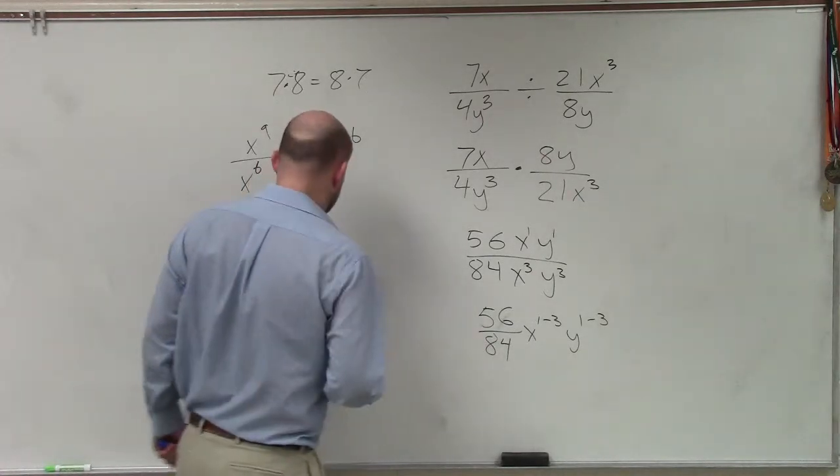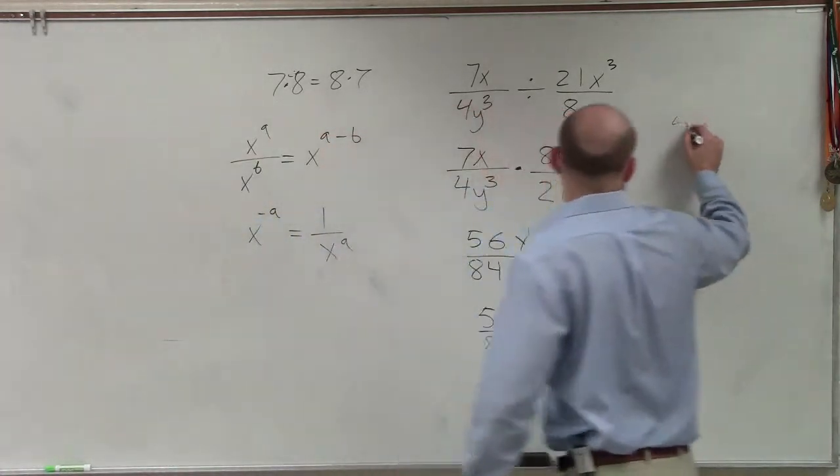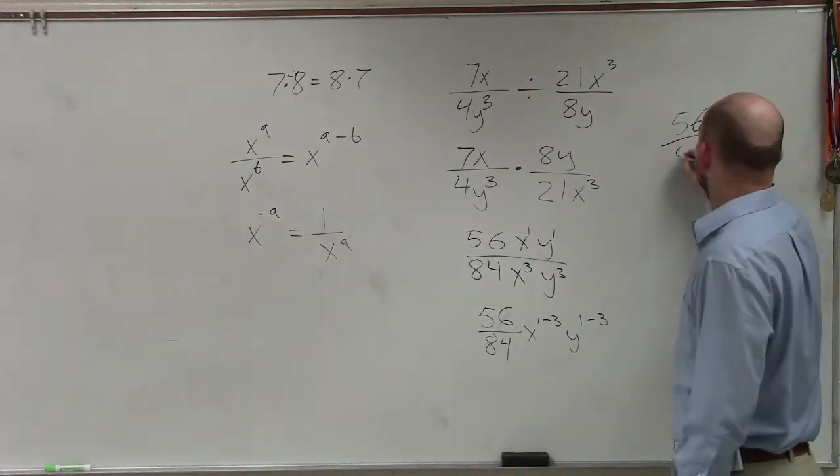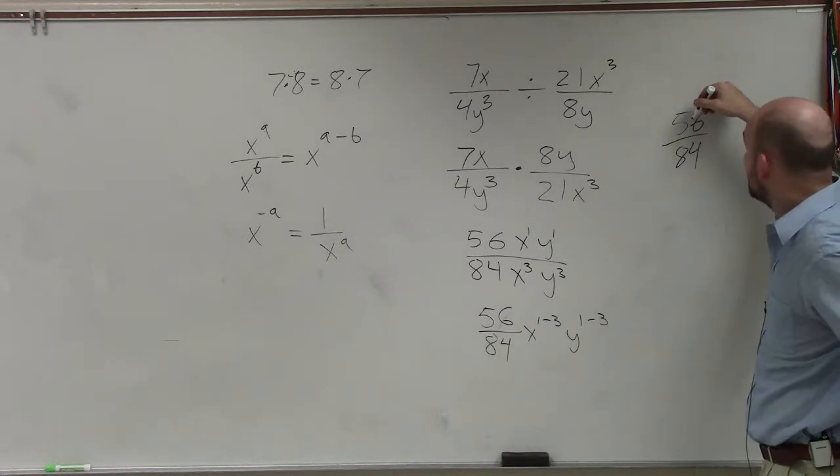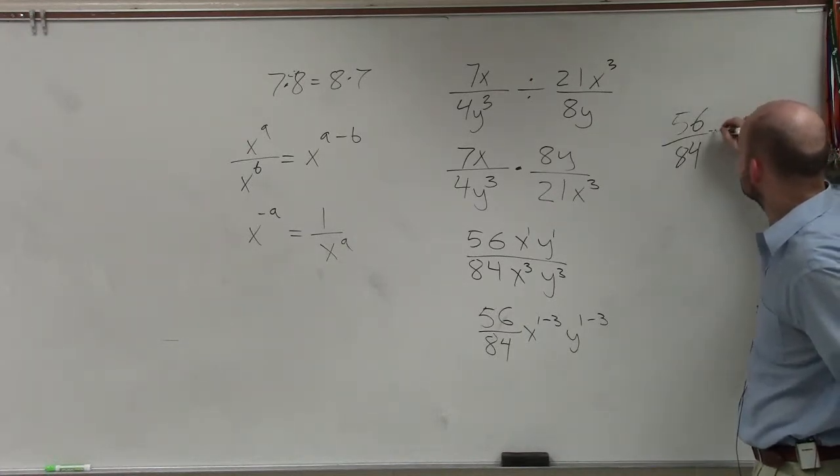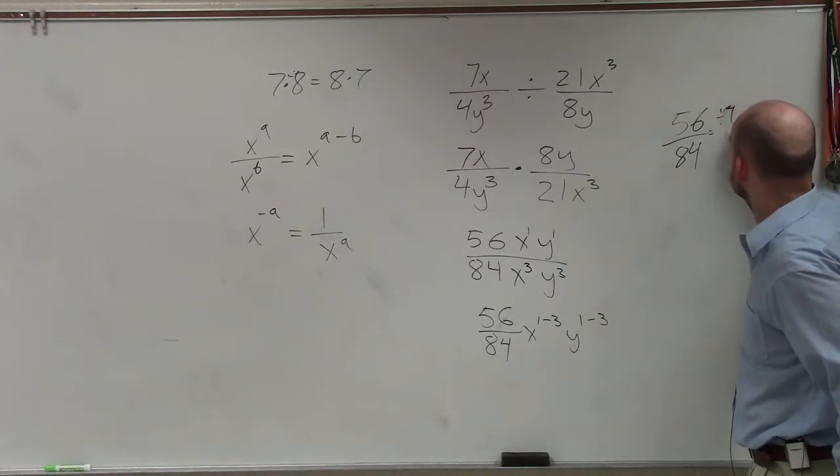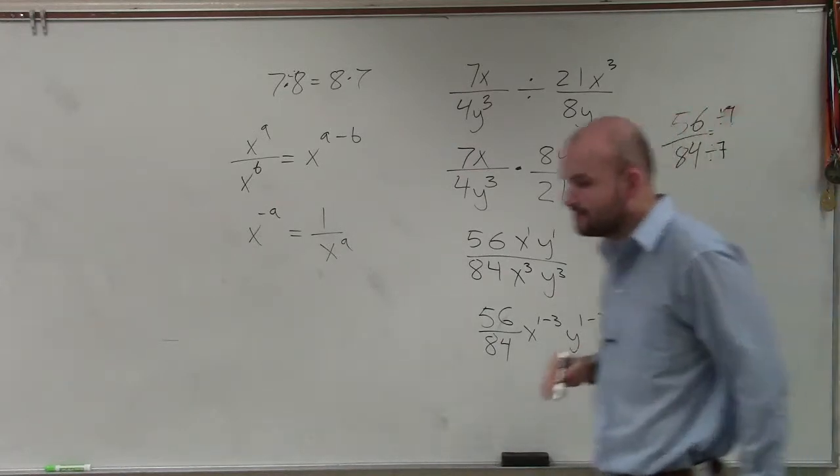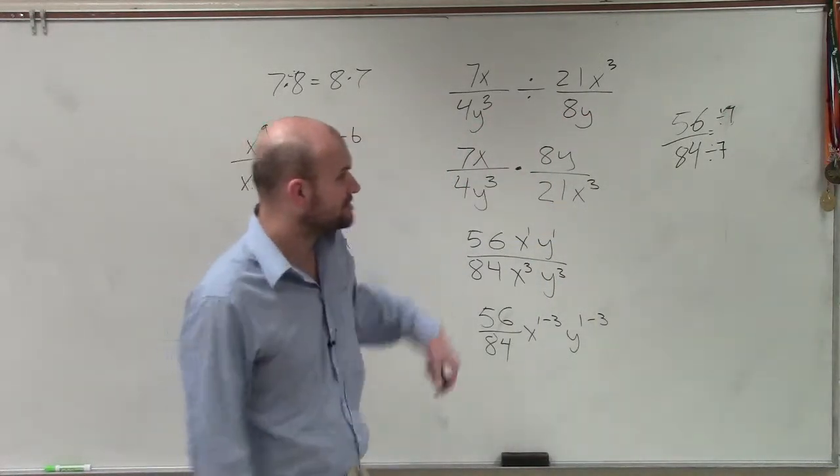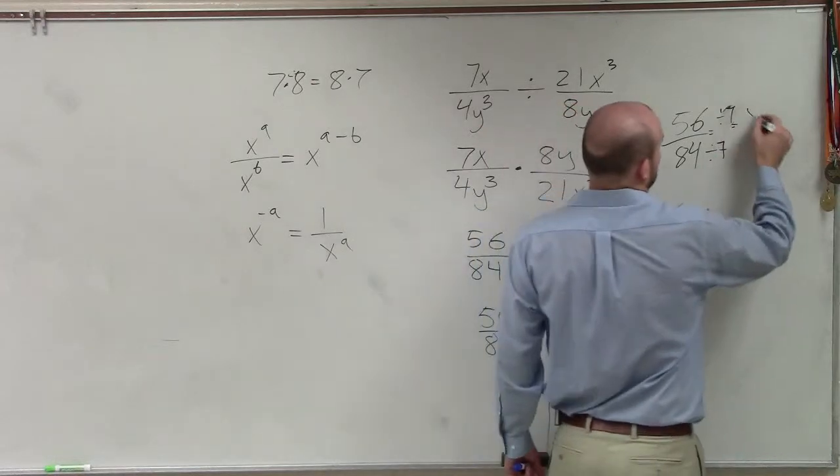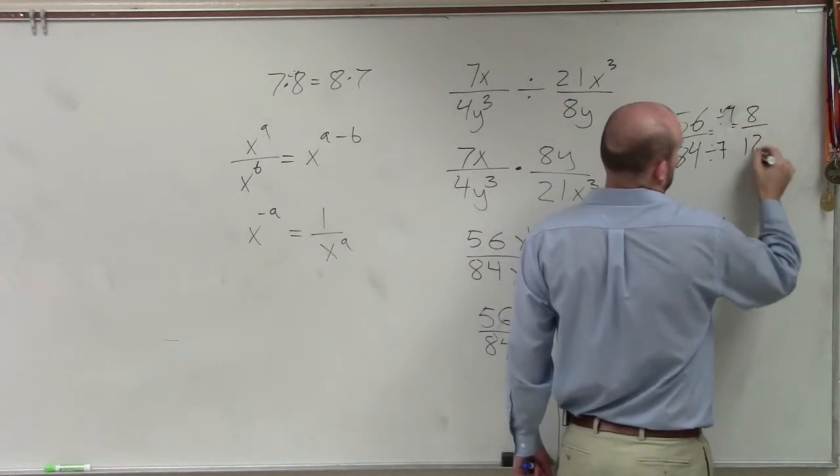So you can think about this. Well, 7 goes into, if I factor out here, 56 over 84. We know that 7 goes into 56, 8 times. So if I divide by 7 on the top and on the bottom, 7 times 12 is 84. So therefore, I'll have 8 over 12.